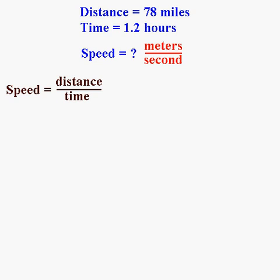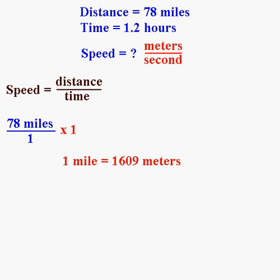You learned to do this back in Module 1, but it's been a while, so let's review. Let's start by converting the distance. We want to convert 78 miles into meters. To do this, we take the number we have — 78 miles — and we make it into a fraction by putting it over 1. We then multiply that fraction by 1, but we need to express 1 in a very particular way. We take the conversion relationship we were given: 1 mile equals 1609 meters.